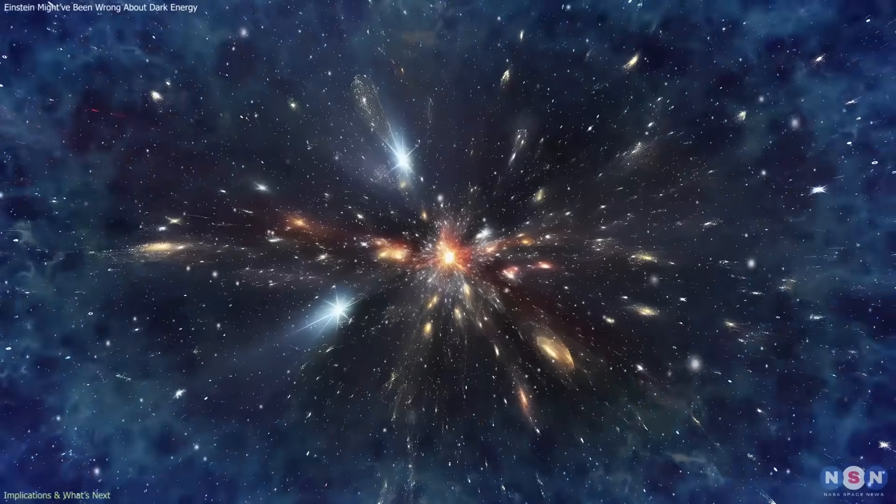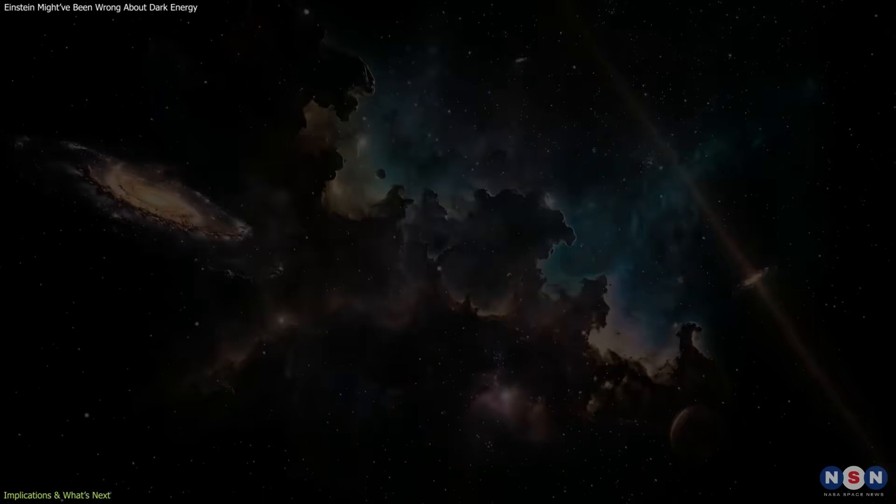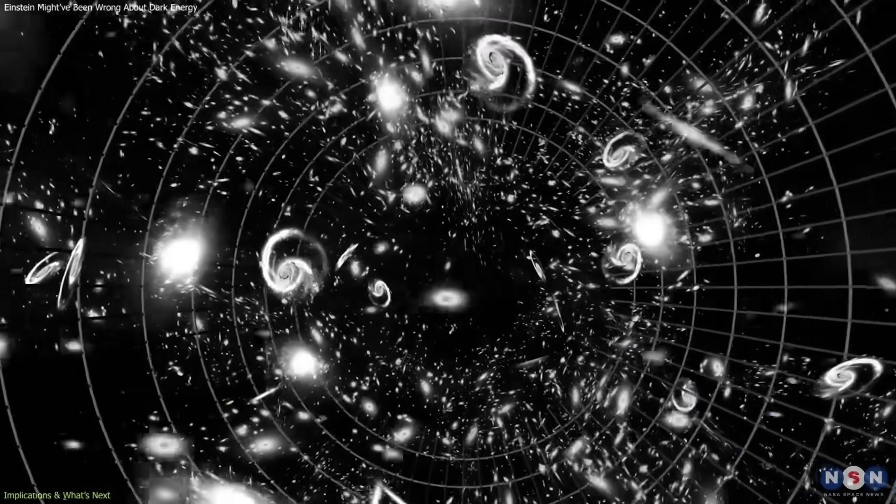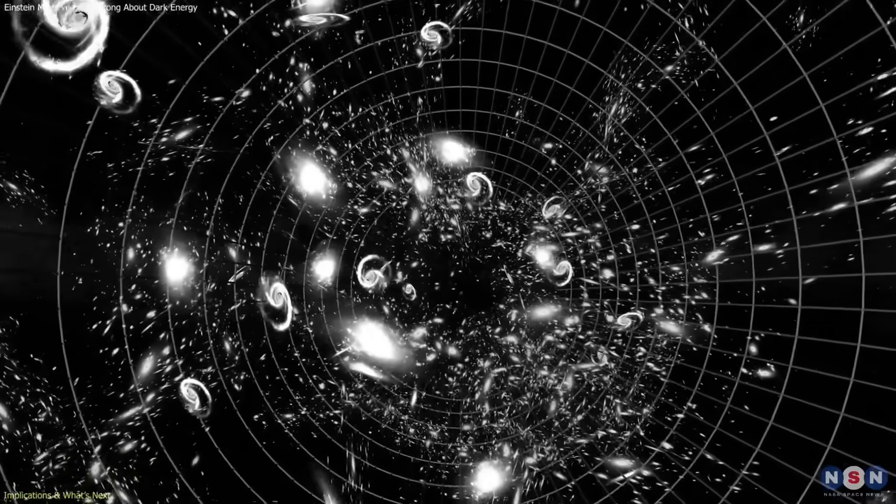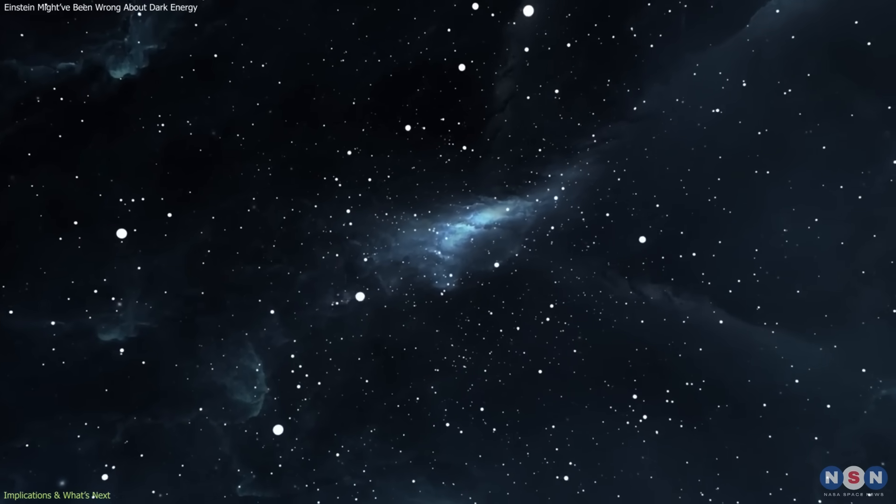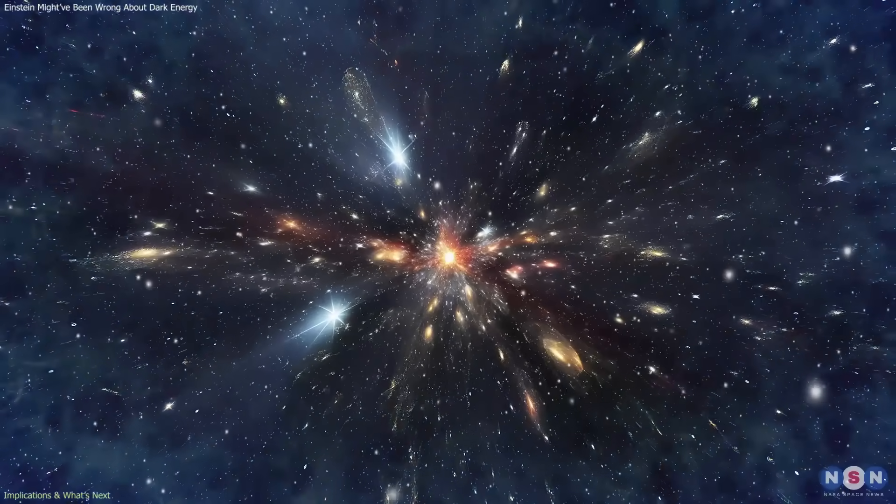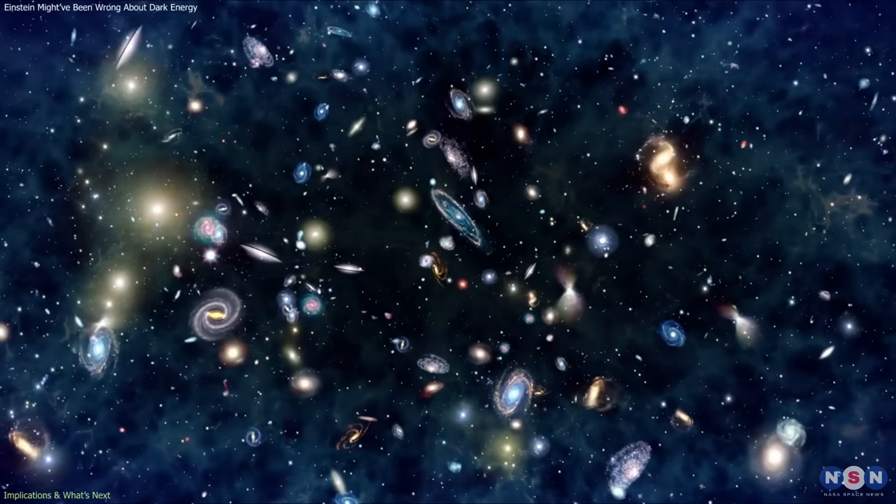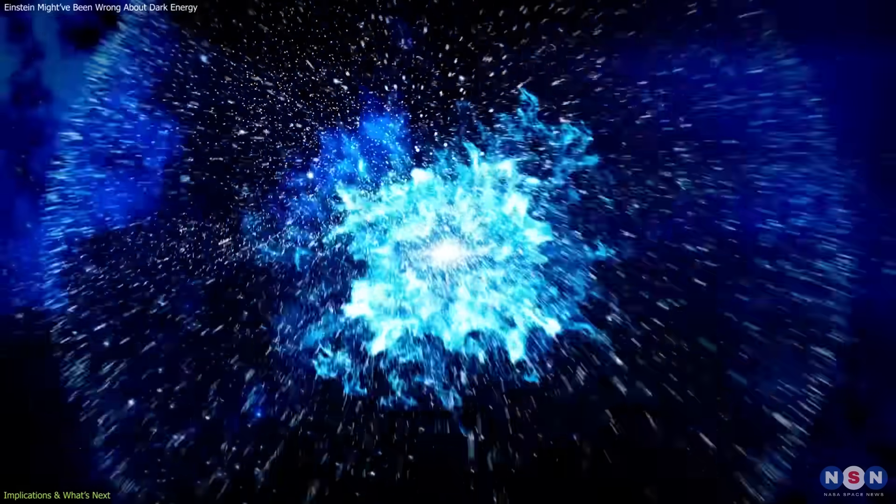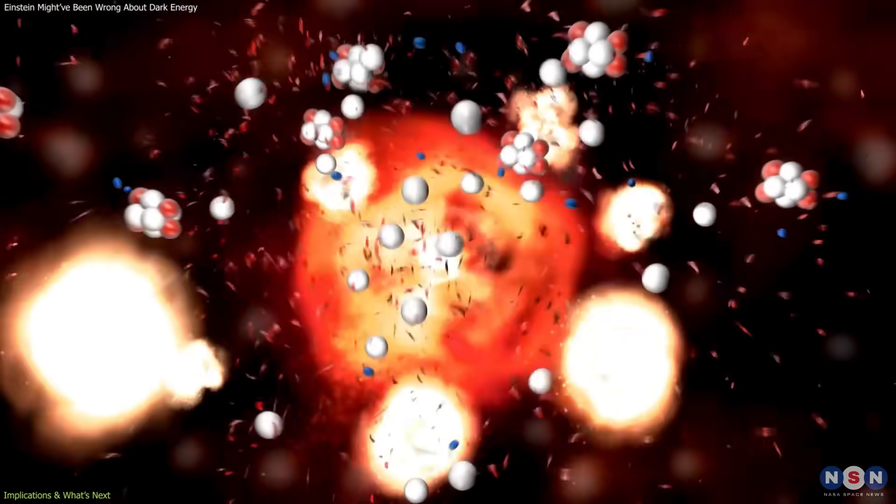If dark energy truly changes over time, it reshapes both our understanding of the cosmos and its long-term fate. Under the traditional constant model, the universe's expansion keeps accelerating forever, leading eventually to a big freeze: galaxies drifting apart until stars burn out and space grows dark and cold. In contrast, if dark energy slowly weakens, the rate of acceleration would also decline. The universe would still expand indefinitely, but more gently, avoiding extreme outcomes such as the Big Rip, where acceleration becomes so intense that even atoms are torn apart.